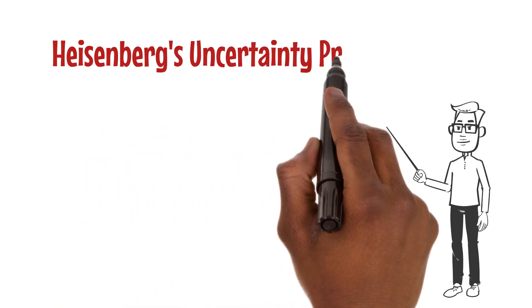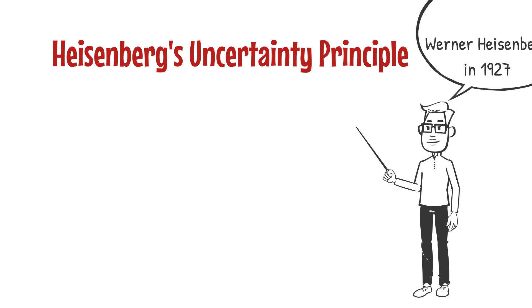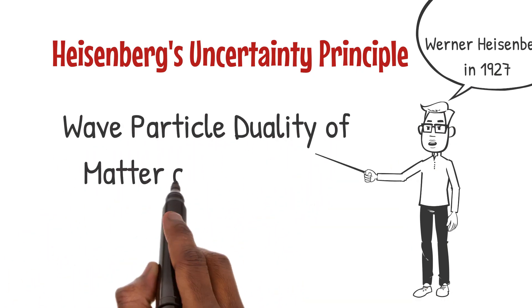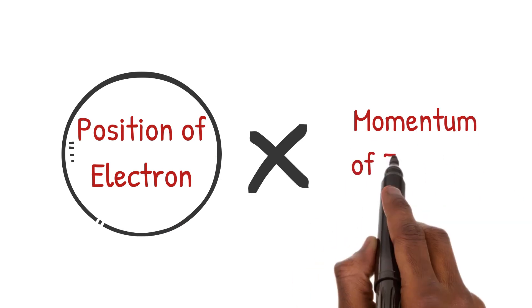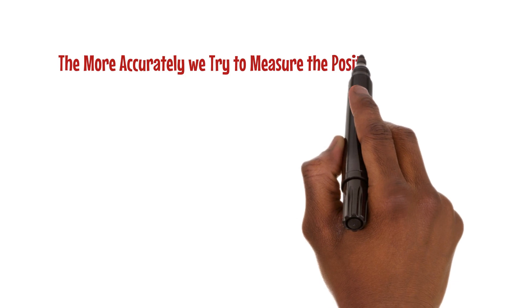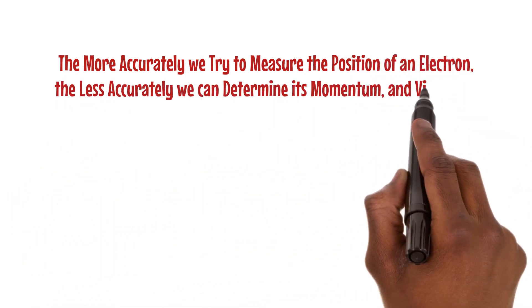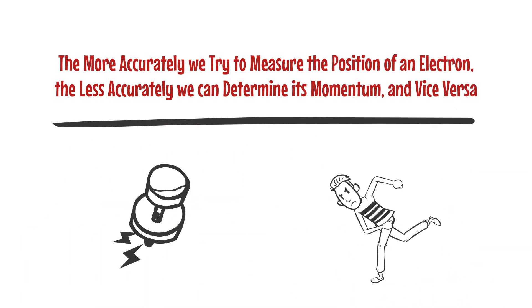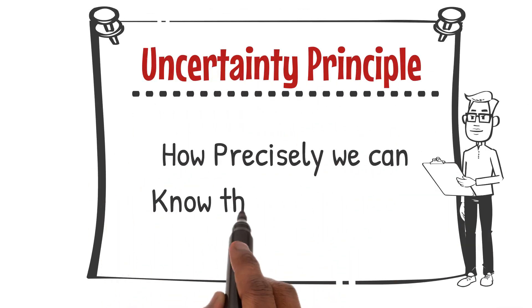Let's begin with Heisenberg's uncertainty principle, discovered by Werner Heisenberg in 1927. This principle arises from the wave-particle duality of matter and radiation, and it tells us that we can never precisely measure both the position and momentum of an electron simultaneously. The more accurately we try to measure the position of an electron, the less accurately we can determine its momentum, and vice versa. It's like trying to pin down a fast-moving object while blindfolded.